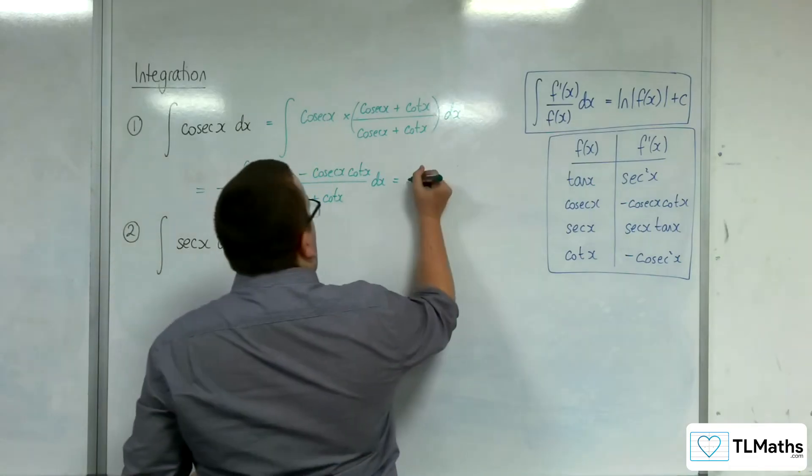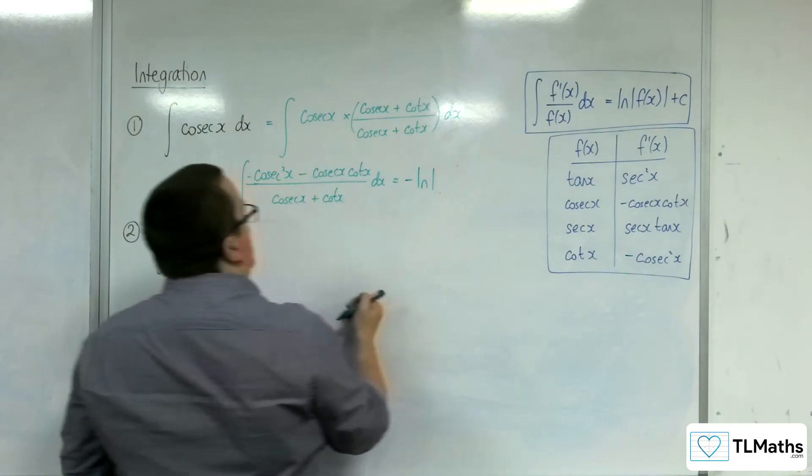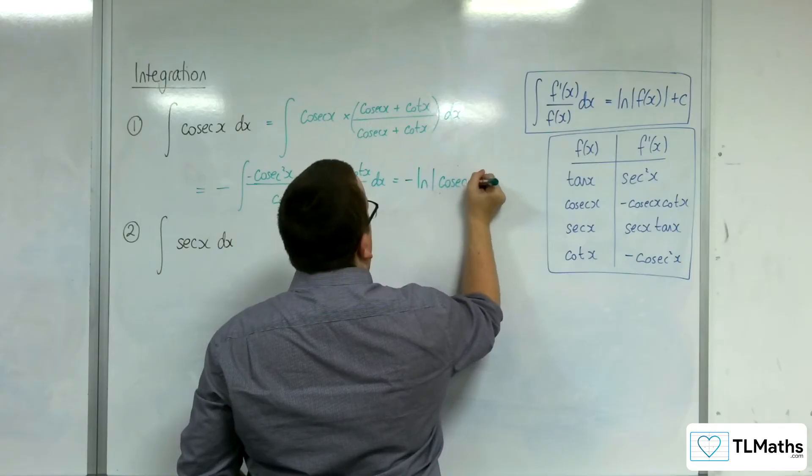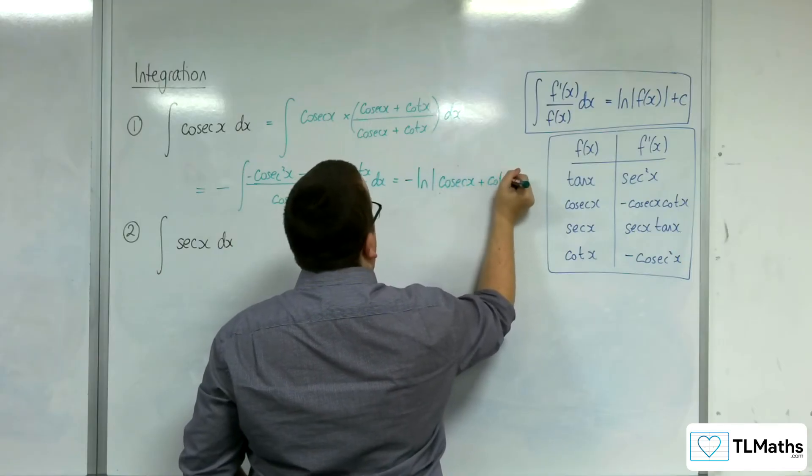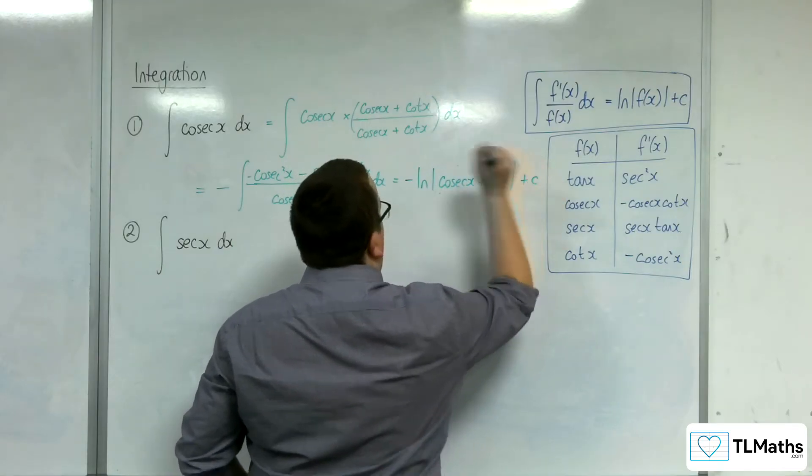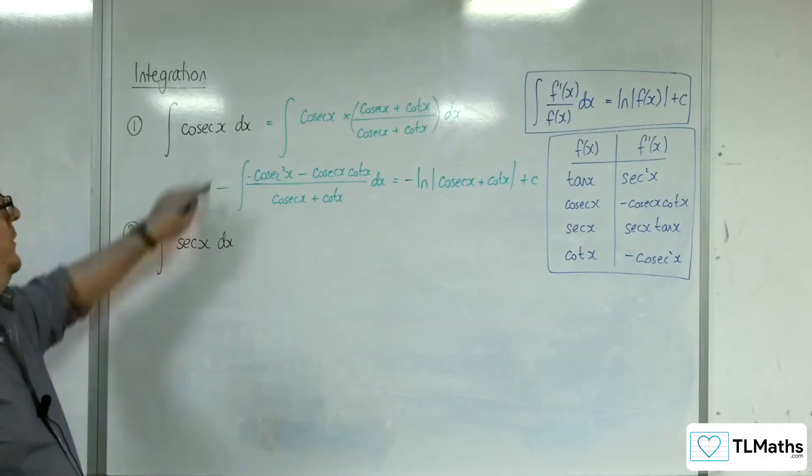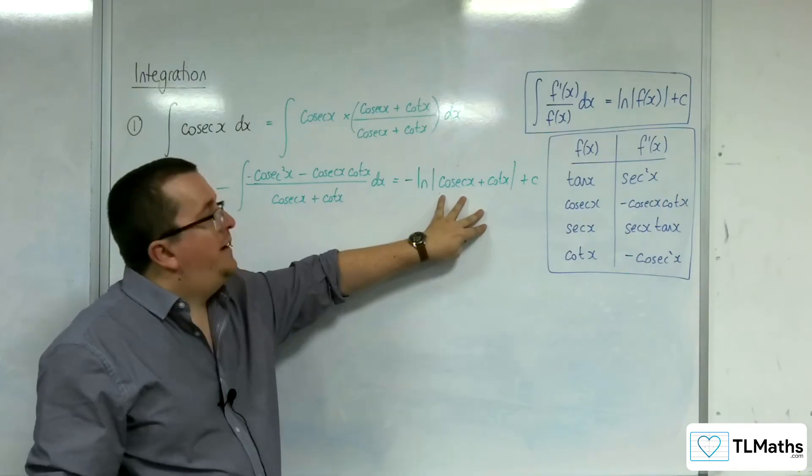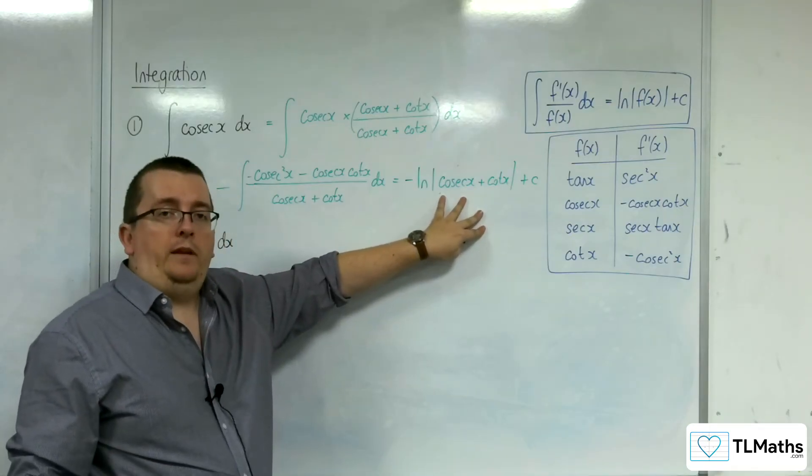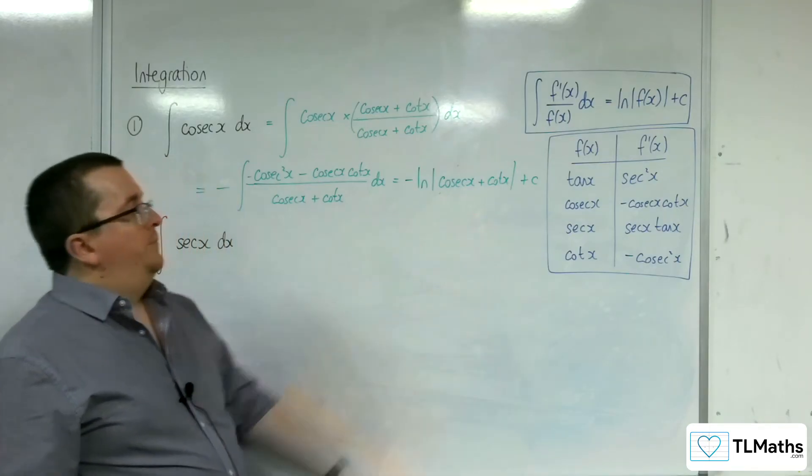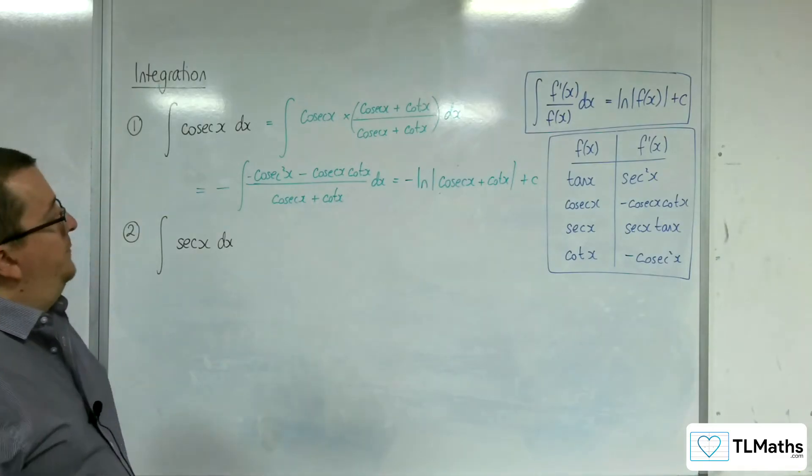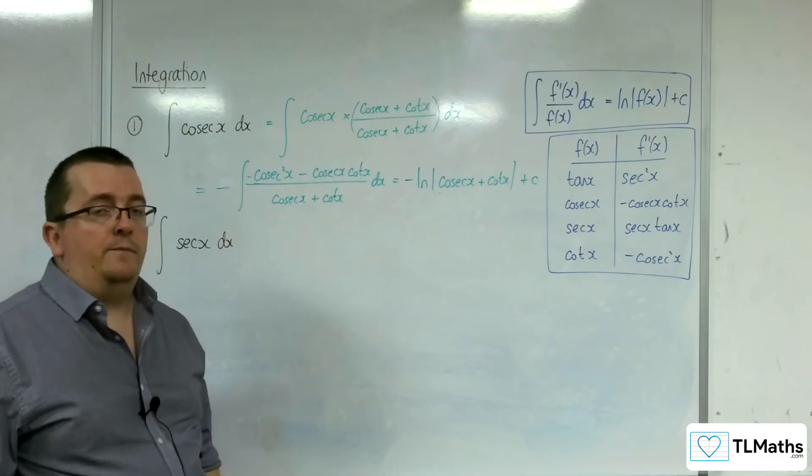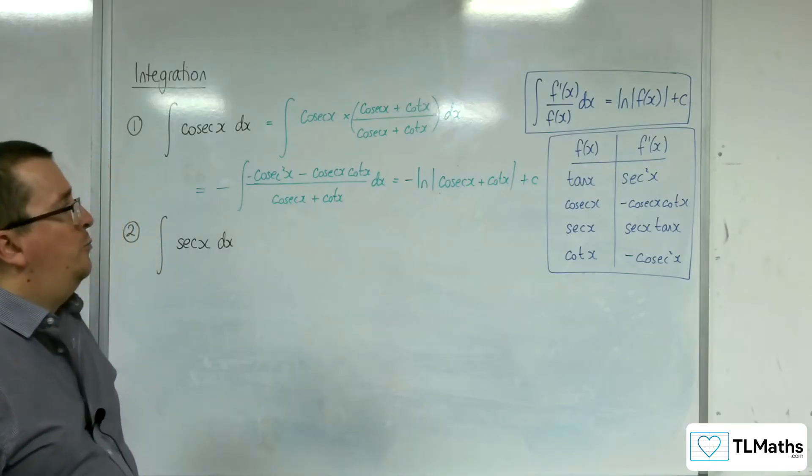So actually, we have the negative log modulus of cosec plus cot plus some constant c. So cosec integrates to minus the natural log of the modulus of cosec plus cot plus c. Now, that result is coming from the fact of me choosing to multiply top and bottom by that function, that expression.